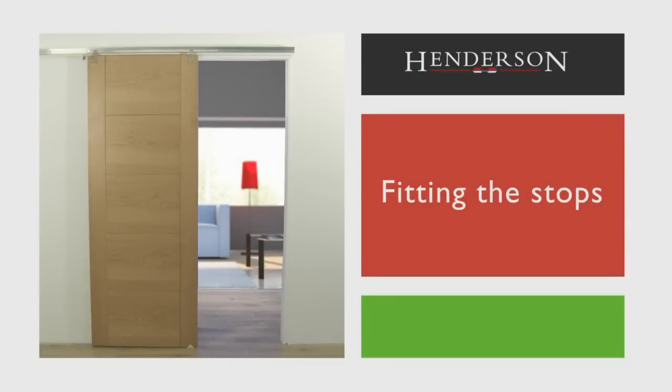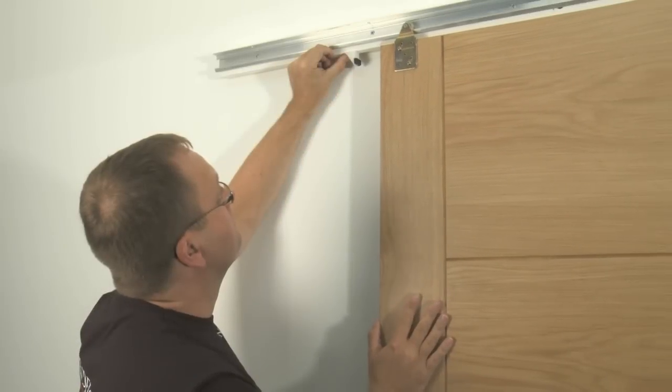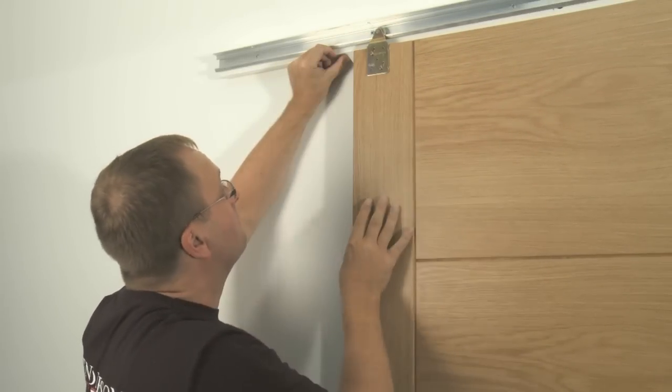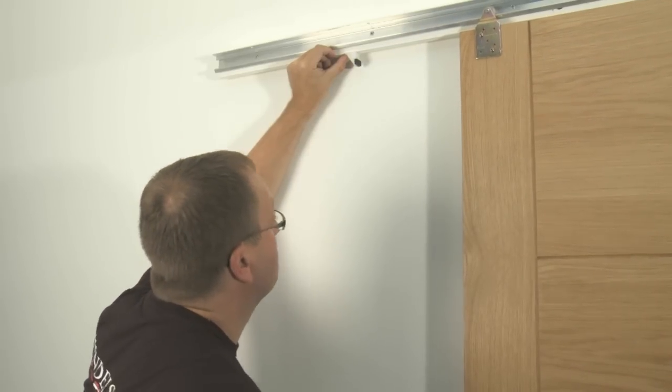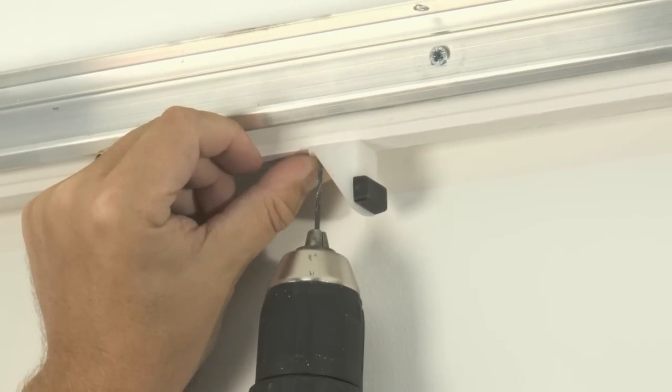Fitting the stops: Now we need to attach the stops so that the door doesn't run out of the track in operation. Locate a suitable position for the stops and fix them into place.